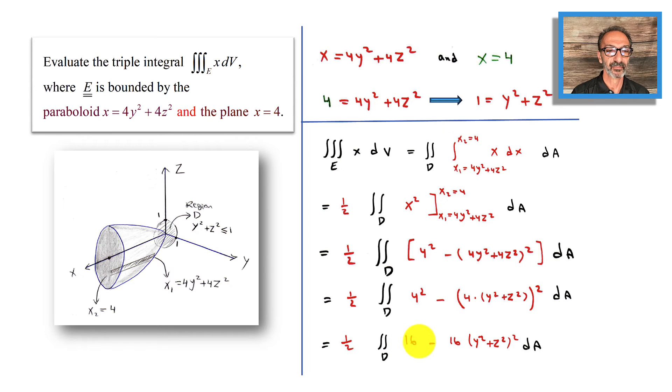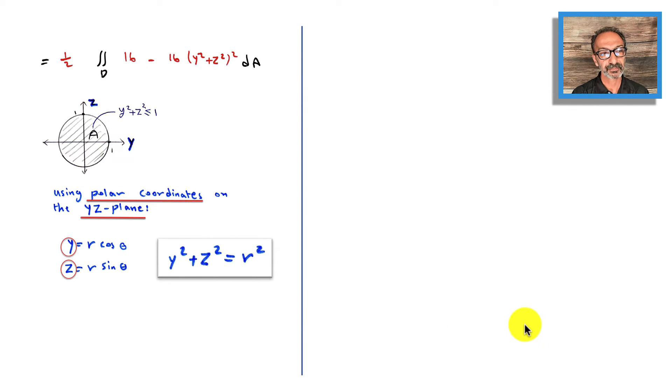Now we focus on D, the region. Region D is y² plus z² less than or equal to 1. Using polar coordinates: y equals r cosine theta, z equals r sine theta, so y² plus z² equals r².